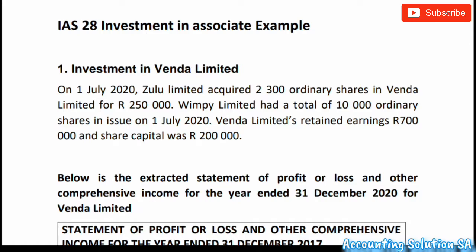If the company is owning between 20 and 49 percent, it does not have power or control, but the company has what we call significant influence. Now, what if the company owns 19 percent? In other cases you will find that the company owns 19 percent but has a significant influence — that is the case where you will be given additional information stipulating that the companies have agreed that even though the company owns 19 percent, it will have a significant influence, which means that such a transaction will be recognized in terms of IAS 28.